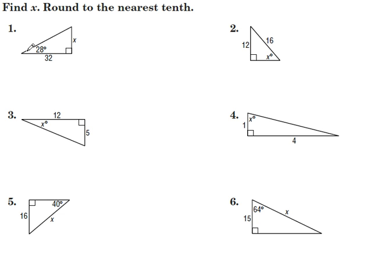For number 1, we have this angle right here, 28 degrees, and we're dealing with the x side and the 32 side. We have to ask ourselves, what is x and what is 32 in terms of hypotenuse, opposite, or adjacent? We need to find x, and the x side is opposite, 32 is adjacent, so that means we need to use tangent.